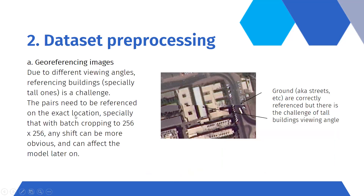After that we did the dataset pre-processing steps, which was a long process since the two images of the same area need to be in the exact same location. The first step was georeferencing the images, making sure each pair aligned precisely. We faced some challenges due to the viewing angles of the buildings, which we then solved. As you can see, the streets are correctly georeferenced, but the buildings shift slightly because of the satellite's viewing angle at the time of capture.